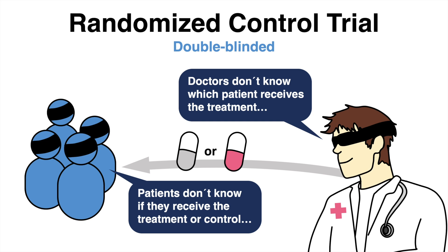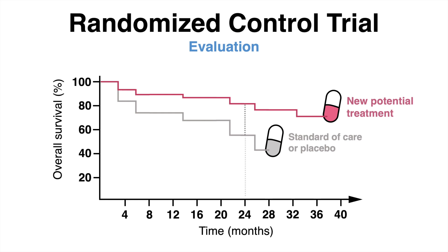Once the study is complete, the data will be reviewed and the investigators can determine whether the treatment and control group are now different in a statistically significant way. Assuming the randomization has successfully created two groups that were virtually identical before the intervention, any difference can now be confidently attributed to the treatment.